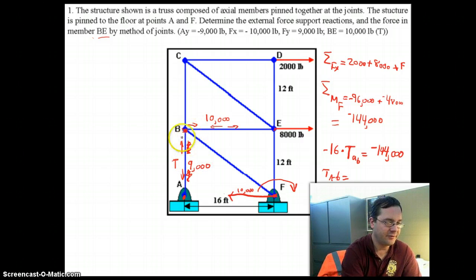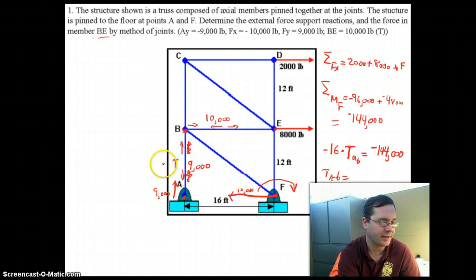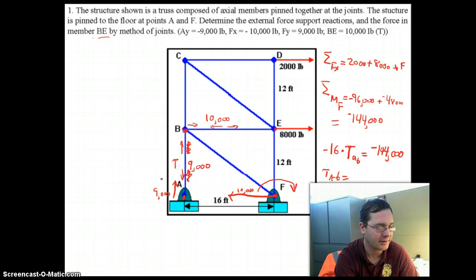Well, if there's 9,000 pounds, if B is pulling A towards itself with 9,000 pounds force, that means that the reaction at point A is 9,000 pounds vertically. In other words, A is pulling down on the structure with 9,000 pounds force, or the structure is pulling up on A with 9,000 pounds force. You could think of it however you wanted to.